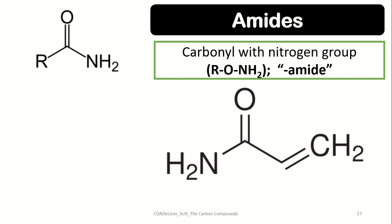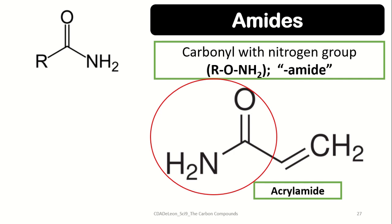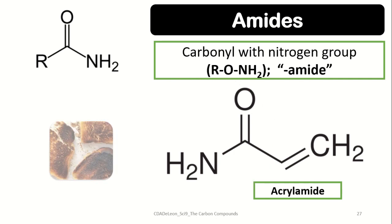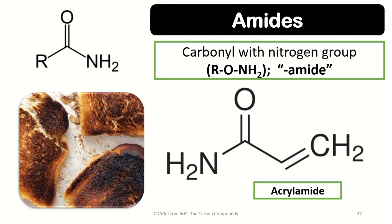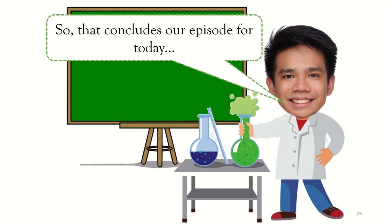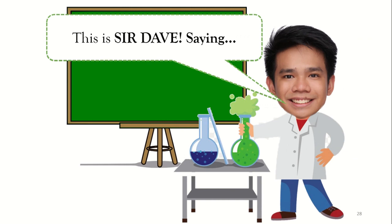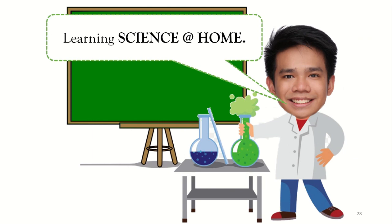Lastly, we have amides. Amides are also nitrogen groups, but this time connected with a carbonyl group. A common compound containing an amide is acrylamide, which is found in different food products that undergo high heat processes, such as toasted bread. That concludes our episode for today. This is Sir Dave saying keep safe and always have fun learning science at home. Goodbye!